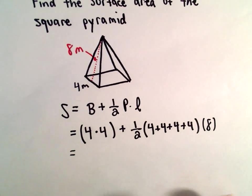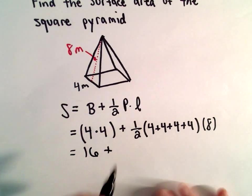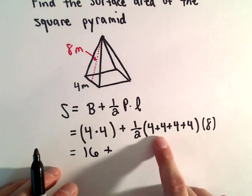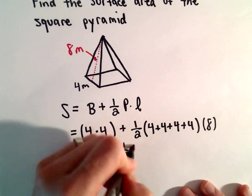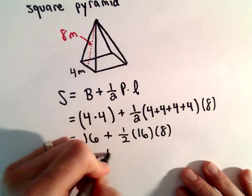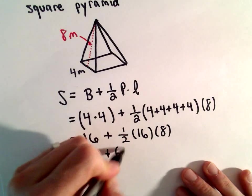Now for the arithmetic. 4 times 4 is 16. 4 plus 4 plus 4 plus 4 is also 16. One-half of 16 is 8, and 8 times 8 is 64.